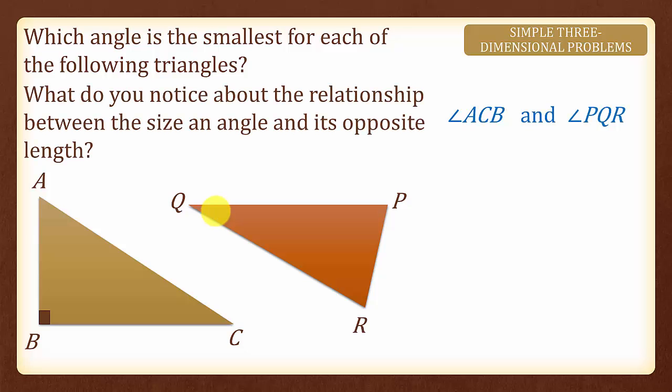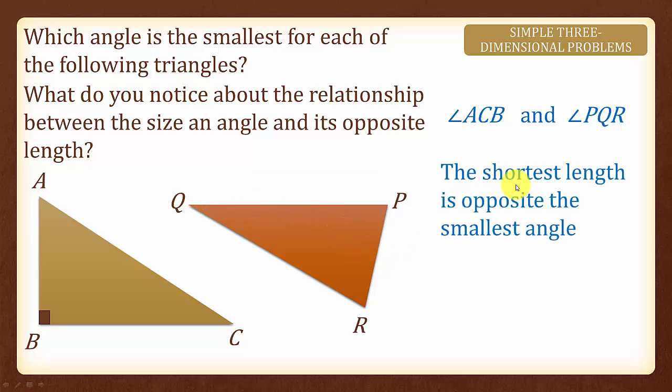Now, what do you notice about the relationship between the smallest angle and its opposite length? You are right. The shortest length is always opposite the smallest angle. Likewise, the longest length is always opposite the largest angle.